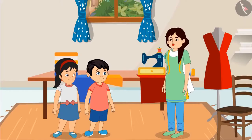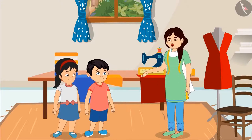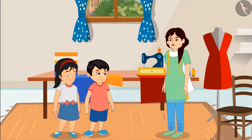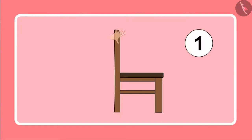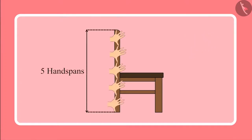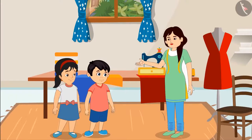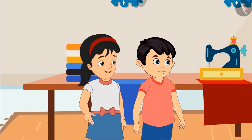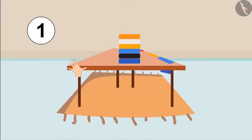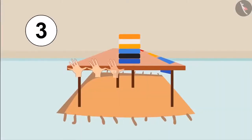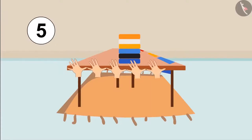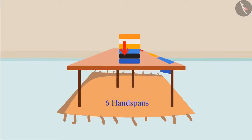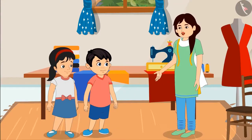Aunty, how do we measure? Look, Chotu, I took the measurement of the length of your shirt with my hand like this. One, two, and three. Your shirt is three handspan long. Okay, Aunty, this is how things are measured. Aunty, what is a handspan? Pinky, the measurement which is taken by hand is called handspan. Both of you can take measurements of some items kept here. Yes, Aunty, I will measure the length of this chair. One, two, three, four, five handspans long. Very good, Chotu. Pinky, can you measure the length of this table? Yes, Aunty. One, two, three, four, five, six. This table is six handspans long. Yes, Pinky, absolutely correct.